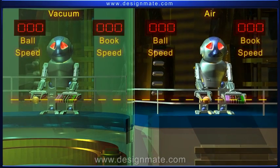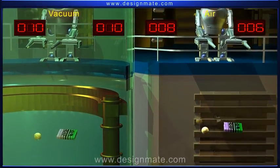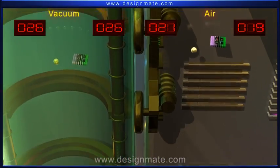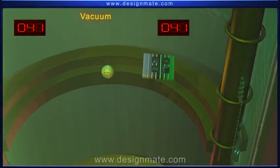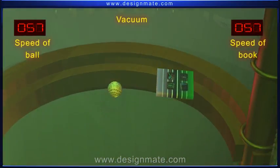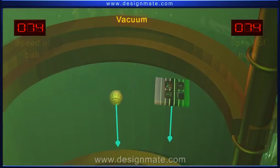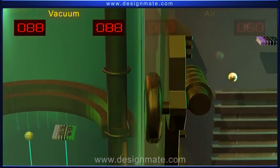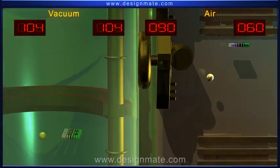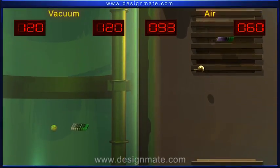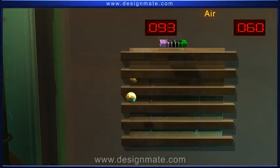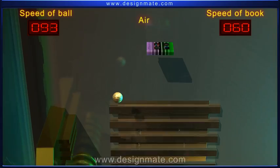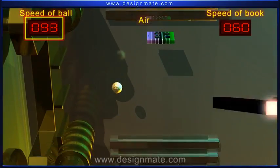Drop them simultaneously in both the media. We can see that in a vacuum, both the objects are falling with the same speed under the influence of the gravitational force. But the ball falling in air is slower than its counterpart in a vacuum. In air, the book falls still slower than the ball. Do you know why?